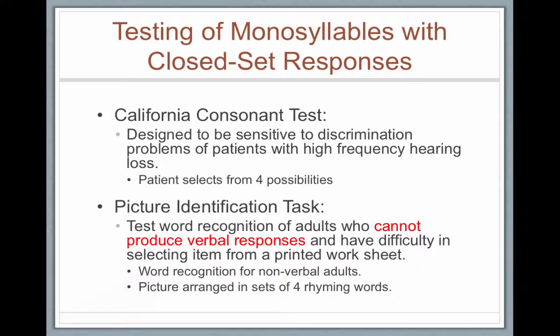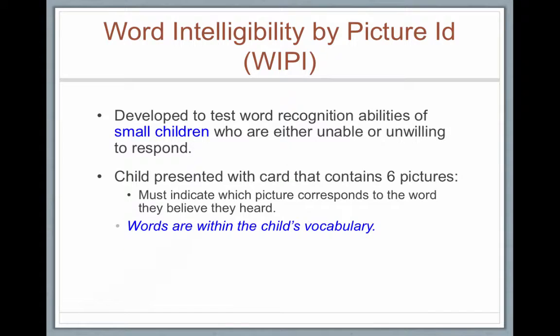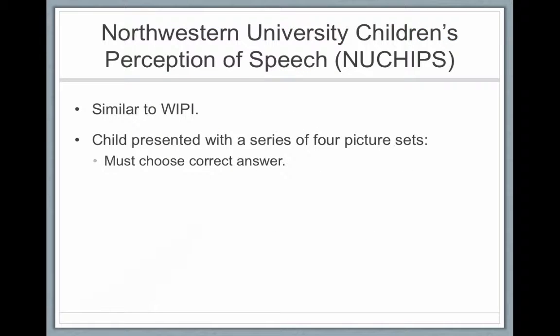Going back to our word test, the picture identification task. Sometimes a person might not verbally be able to produce a response. For adults that might be nonverbal or for children that might have expressive language issues, we would do picture identification tasks. The most common is called the WIPI — the Word Intelligibility by Picture ID. Six pictures, words are all within a child's vocabulary, and the child is asked to point to the picture rather than speak it. There are other tests too, but the WIPI is the most common.